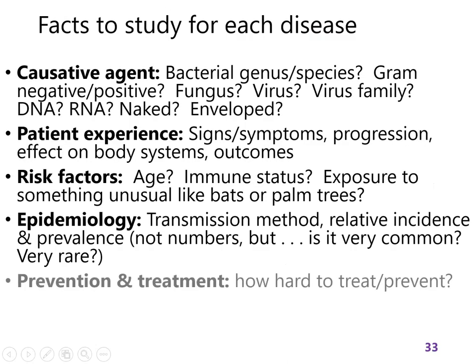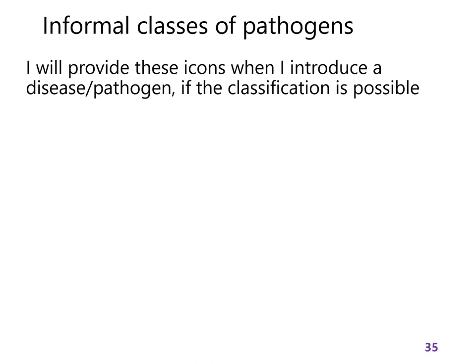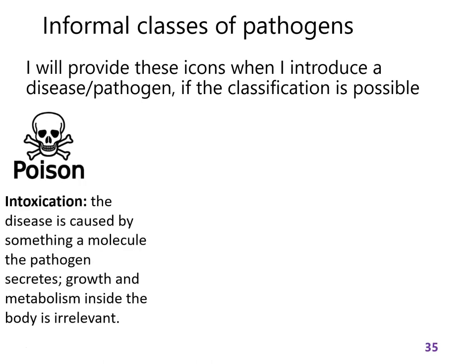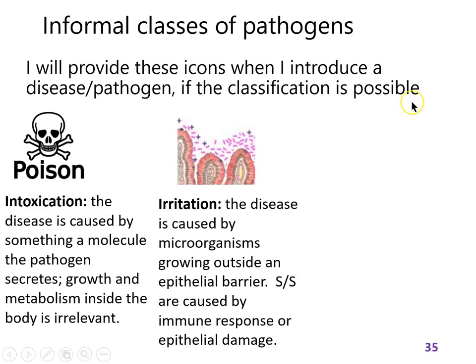Let's look at informal classes of pathogens. This is not a standard thing in microbiology, but I classify diseases this way when appropriate. Some diseases are caused by toxins that microorganisms make — food poisoning is an example where the only thing causing disease is the toxin. It doesn't matter if the organism is dead or alive; the toxin it made is what makes you sick. Botulism is an example, and I'll put this in the upper right corner as an intoxication.